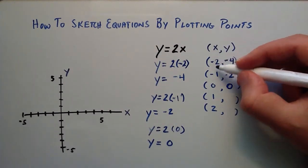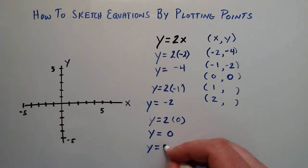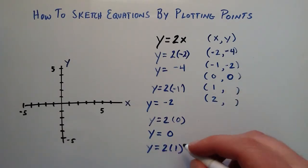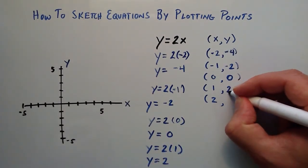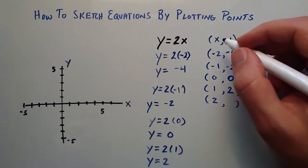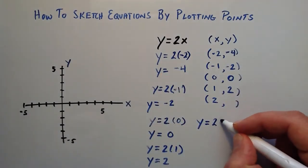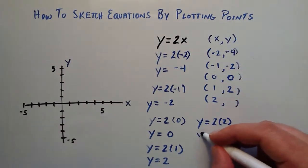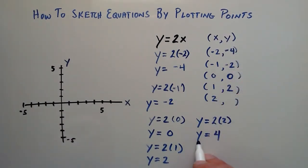When x equals 1, we have y equals 2 times 1, and 2 times 1 is equal to 2. So y equals 2 is the corresponding y value, and we put that in the y position of this ordered pair. For the last one, y equals 2 times x, and x is equal to 2. So 2 times 2 is equal to 4. When we have an x component of 2, we get a corresponding y component of 4.